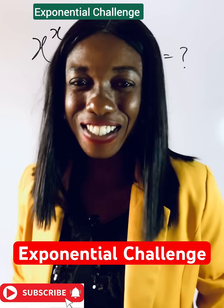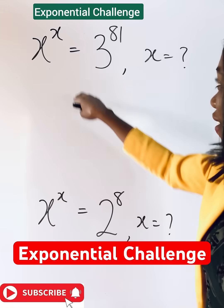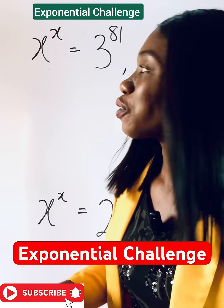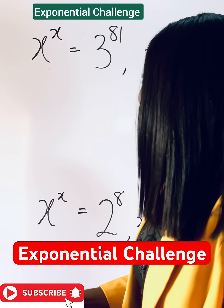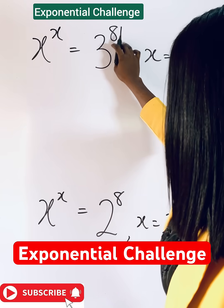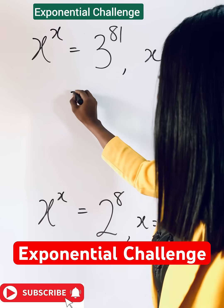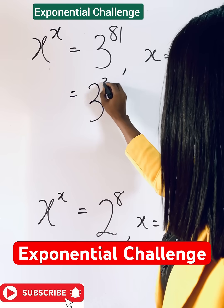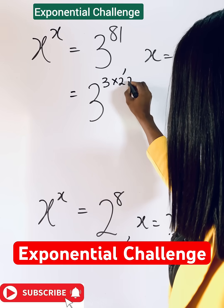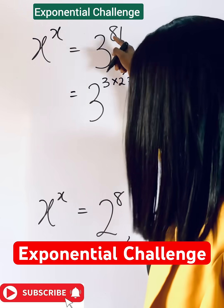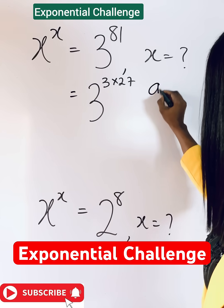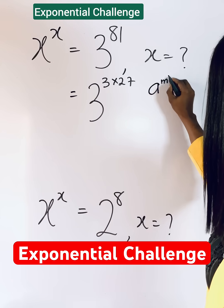You weren't taught this in school. Now this is what you have, so what do you do? We're going to remember that 3 raised to the power of 81 — 81 can be the same as 3 raised to the power of 3 times 27, when you multiply this it gives you 81. So remember that if you have a raised to power m raised to power n,